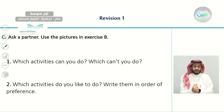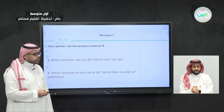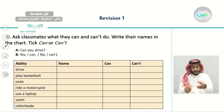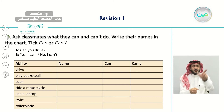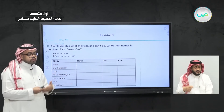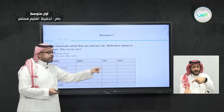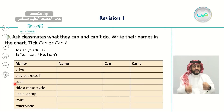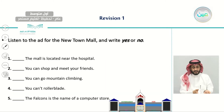We said it is good to ask your classmates about what they can and cannot do, and write their names in a chart with can or can't. The chart lists activities like driving, playing basketball, cooking, riding a motorcycle, and using a laptop. Write the name of the person you are interviewing — whether a family member or classmate — and mark can or can't in front of each activity.